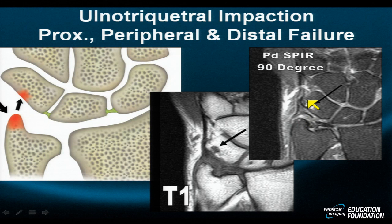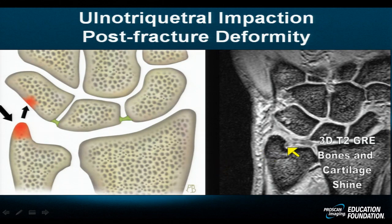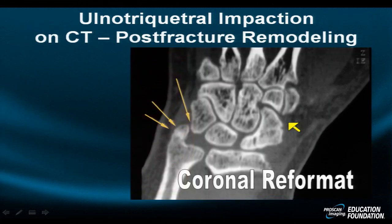Another example of ulno-triquetral impaction is demonstrated in this patient with a dysplastic, fat, broad ulnar styloid. Small pseudocysts on both sides of the triquetrum and ulna are identified. The peripheral aspect of the TFCC is inflamed all around the ulno-meniscus homolog. Synovitis surrounding the ulnar styloid involving the ulnar styloid recess and extending into the fovea is apparent on the T1-weighted image as intermediate signal intensity. On the gradient echo image, degeneration and inflammation has extended into the triangular fibrocartilage itself, and pseudocysts from abutment in the triquetrum have resulted.